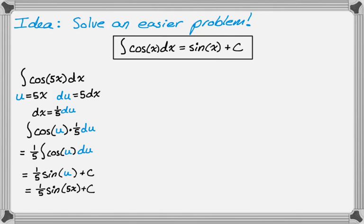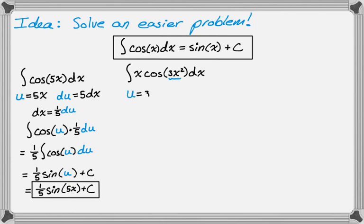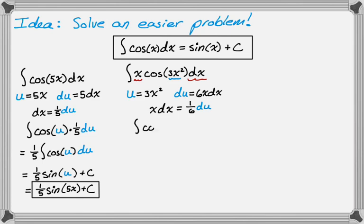This will happen over and over again. Say we have the integral of x times cosine of 3x² dx. We have to make a choice, and as noted, you almost always go with whatever the argument of the trig function is, so I'm going to try u equals 3x². Then we figure out du and see if we can match it up. So du should be 6x dx. Looking at the original, we don't have a 6, but we do have an x and a dx, which means that x dx can be replaced with 1/6 du.